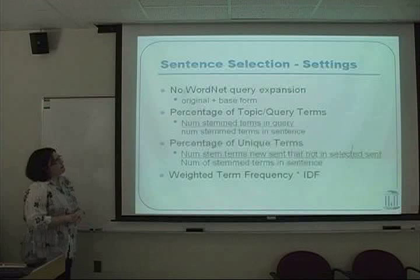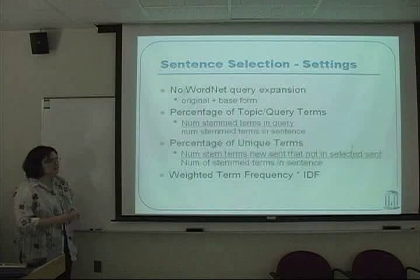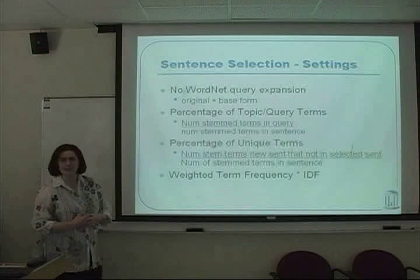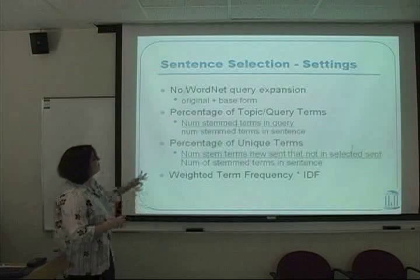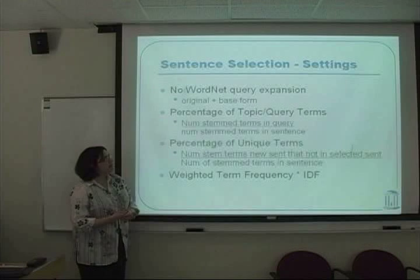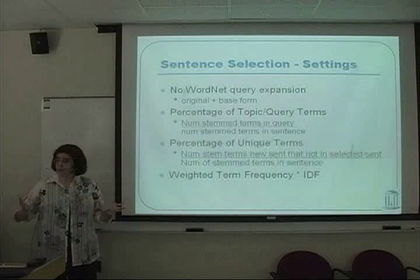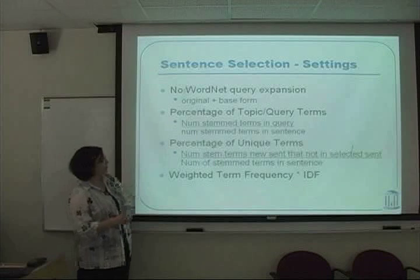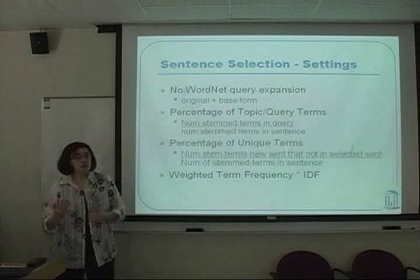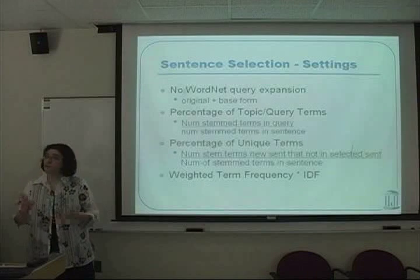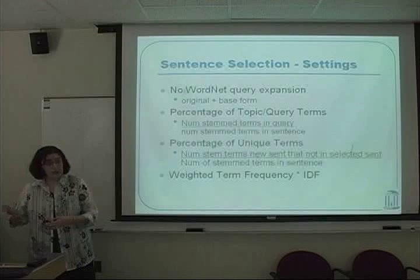Our first potential sentence selection strategy was query expansion. Based on our preliminary results we threw this away — it didn't seem to do anything for us. We wanted to favour the percentage of topic or query terms that were in the sentence, and we were also thinking about favouring the percentage of new terms — unique words that were in the sentence and not in the summary yet.